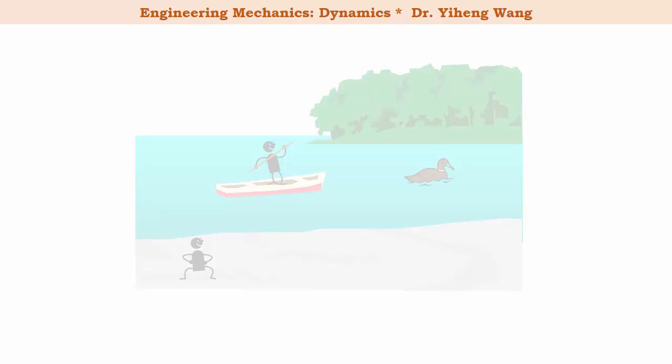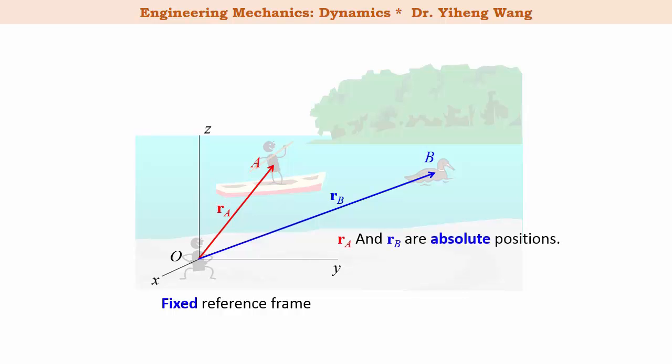Since the person on the bank is not moving, we can set up a fixed reference frame, that is a 3D rectangular coordinate system originated on him. To his eyes both the person on the boat and the duck are moving, and at any given point their positions can be represented by position vectors, r_A and r_B. These two positions are known as the absolute positions, since they are observed from a reference frame fixed on earth.